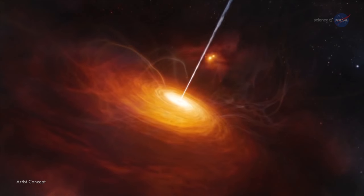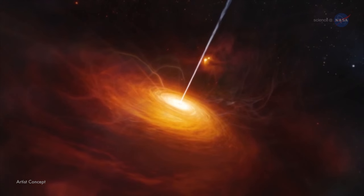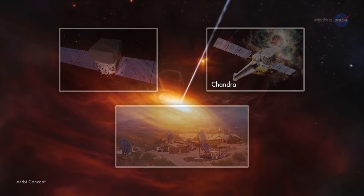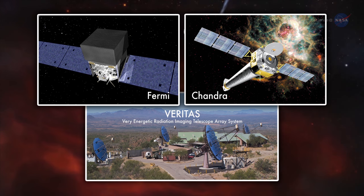Perlman and his colleagues recently attempted to do so by using X-ray and gamma-ray observations of distant quasars by the Chandra X-ray Observatory, Fermi Gamma-ray Space Telescope, and the Very Energetic Radiation Imaging Telescope Array System, or VERITAS.